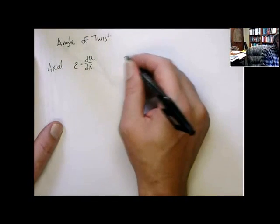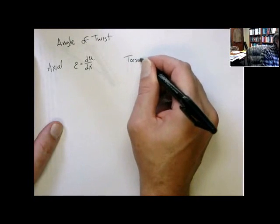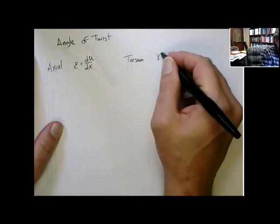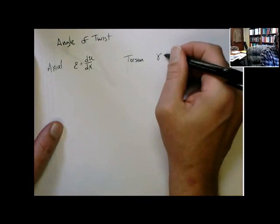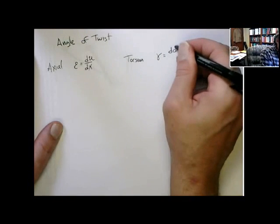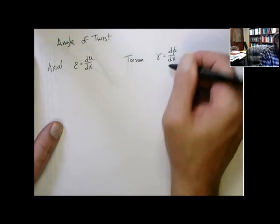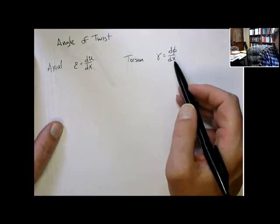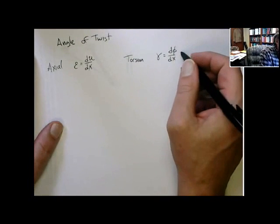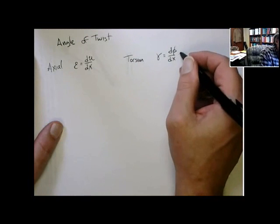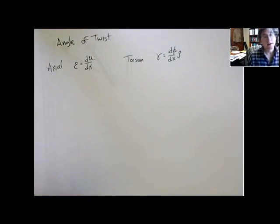We showed that the shear strain gamma is equal to dφ/dx, and that can further the angle of twist with respect to x, times rho. Remember, it had that additional issue that is proportional to radial distance.